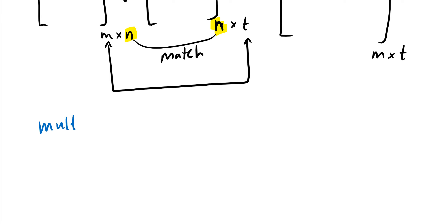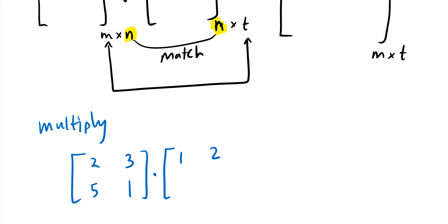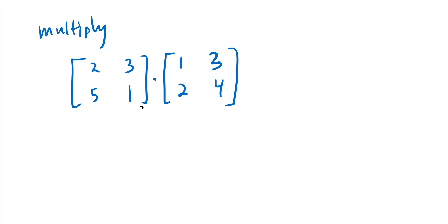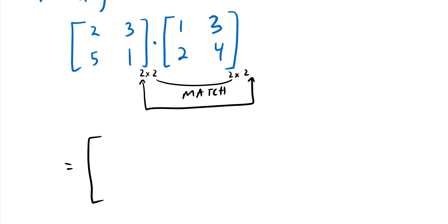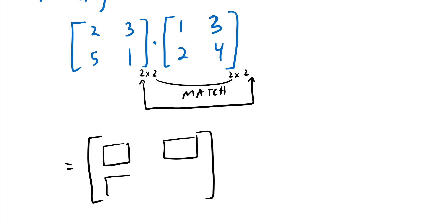Let's say we want to multiply the matrix [2, 3; 5, 1] by [1, 2; 3, 2; 4]. This is a 2×2 and a 2×2, so the dimensions match and we can multiply. The result will be a 2×2 matrix, with some number in each of the four entries.